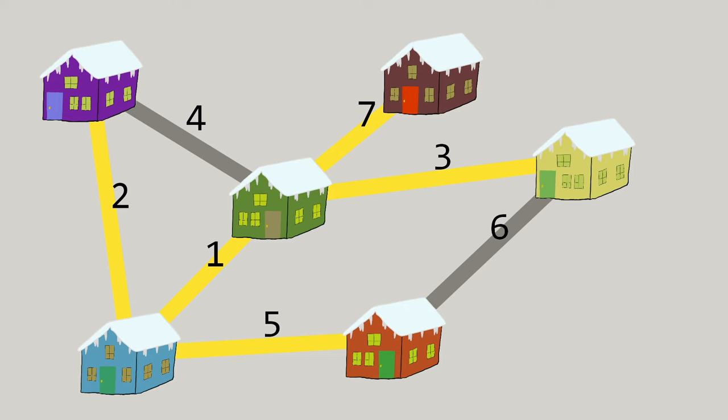The question is whether the locally optimal choices we made at each step in this algorithm, picking the lightest road that created a new connection in the town, resulted in a globally optimal solution.